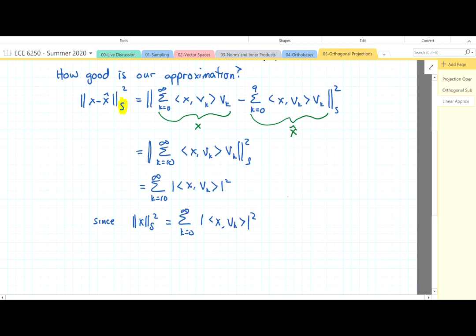So now the whole matter is, if the first ten terms, zero through nine, the ones that we chose, so x comma vk's if you will, are much larger than the others, the relative error is small.